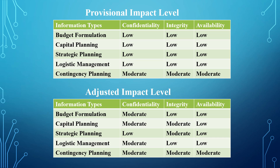Why did you determine that integrity is low for budget formulation? Why did you determine that availability is low for budget formulation? The same applies to the remaining information types. The table below shows the adjusted impact levels resulting from the meeting with the system owner, the ISSM, the CISO, or whoever you report to as an ISSO, security analyst, or cybersecurity analyst.